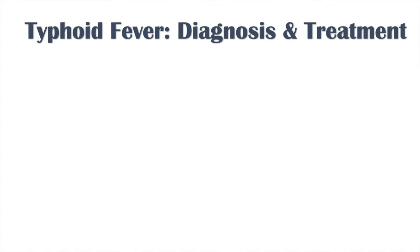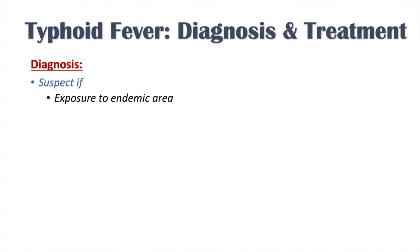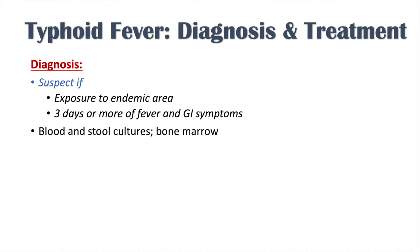Diagnosis of typhoid fever starts with clinical suspicion — you suspect it when there has been exposure to an endemic area and there are three or more days of fever plus GI symptoms such as diarrhea, constipation, abdominal pain, hepatosplenomegaly, or intestinal bleeding. Confirmatory tests include blood and stool cultures, or bone marrow culture. Often it is an empiric diagnosis based on symptoms, endemic area exposure, and vaccination status.